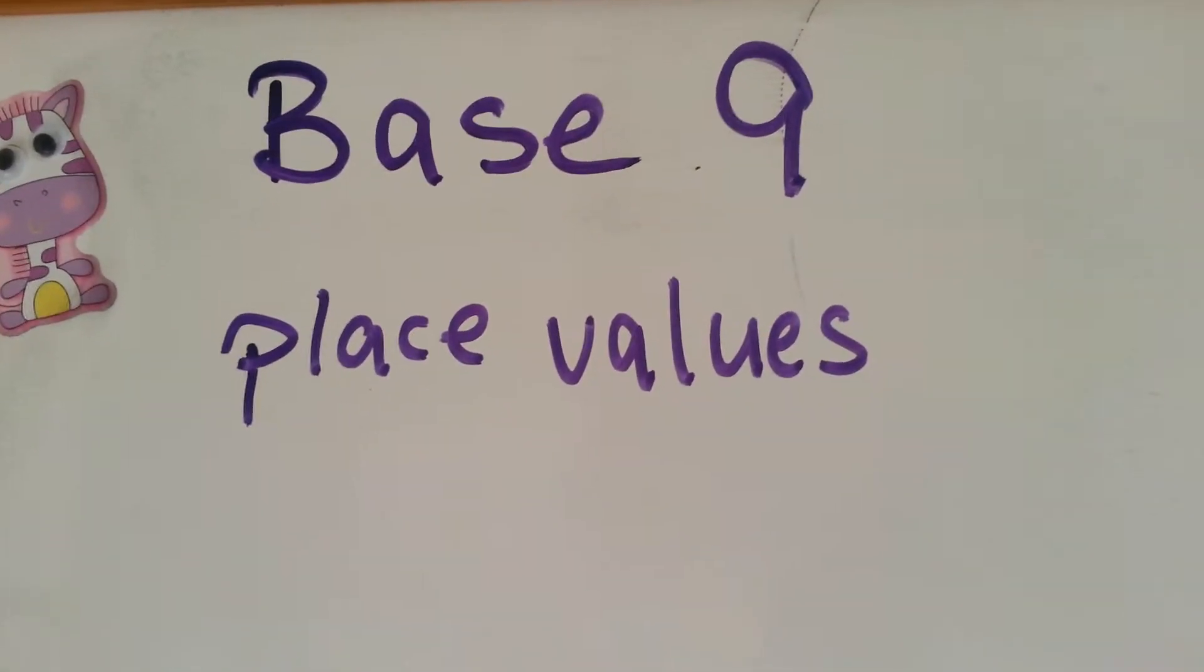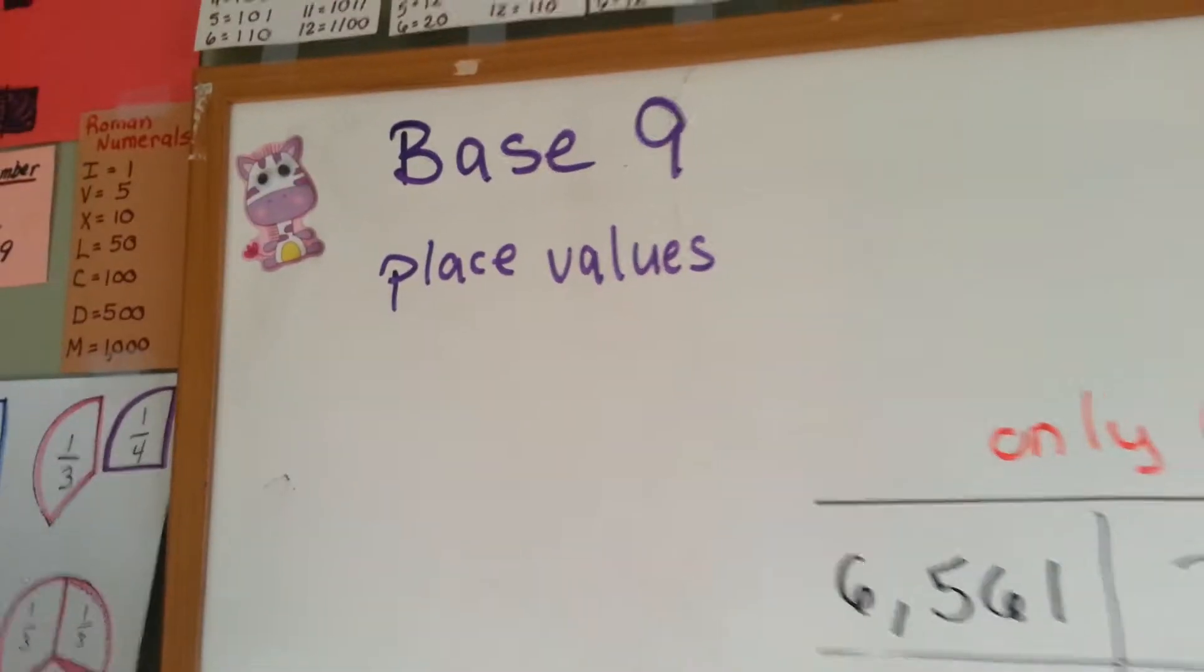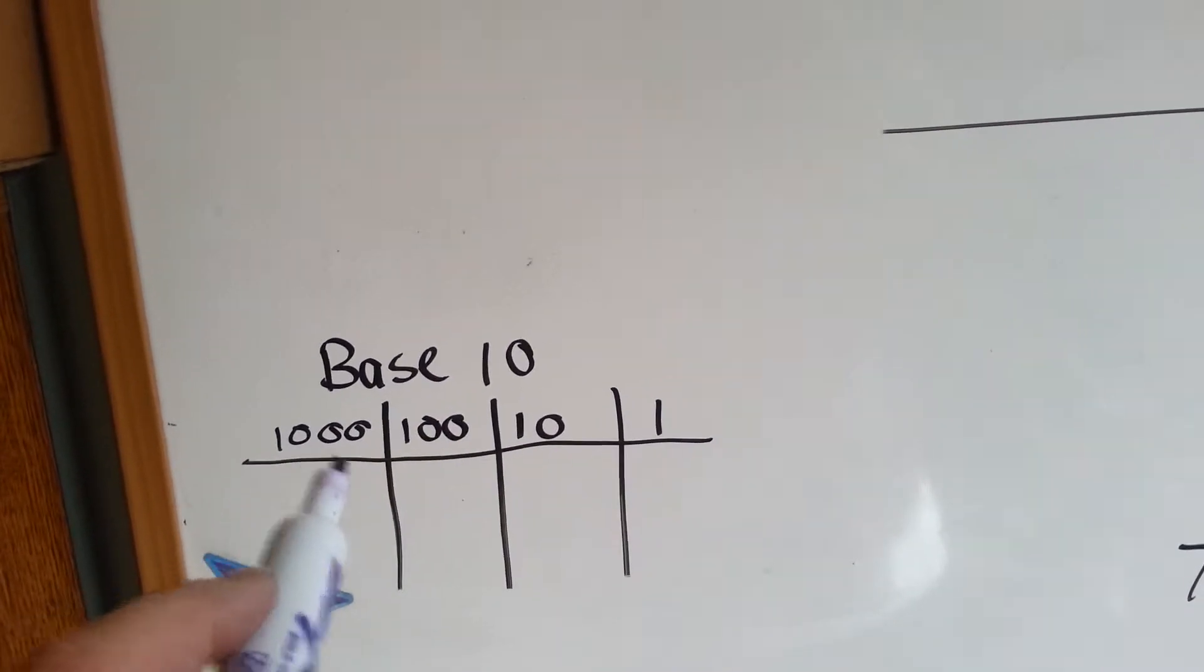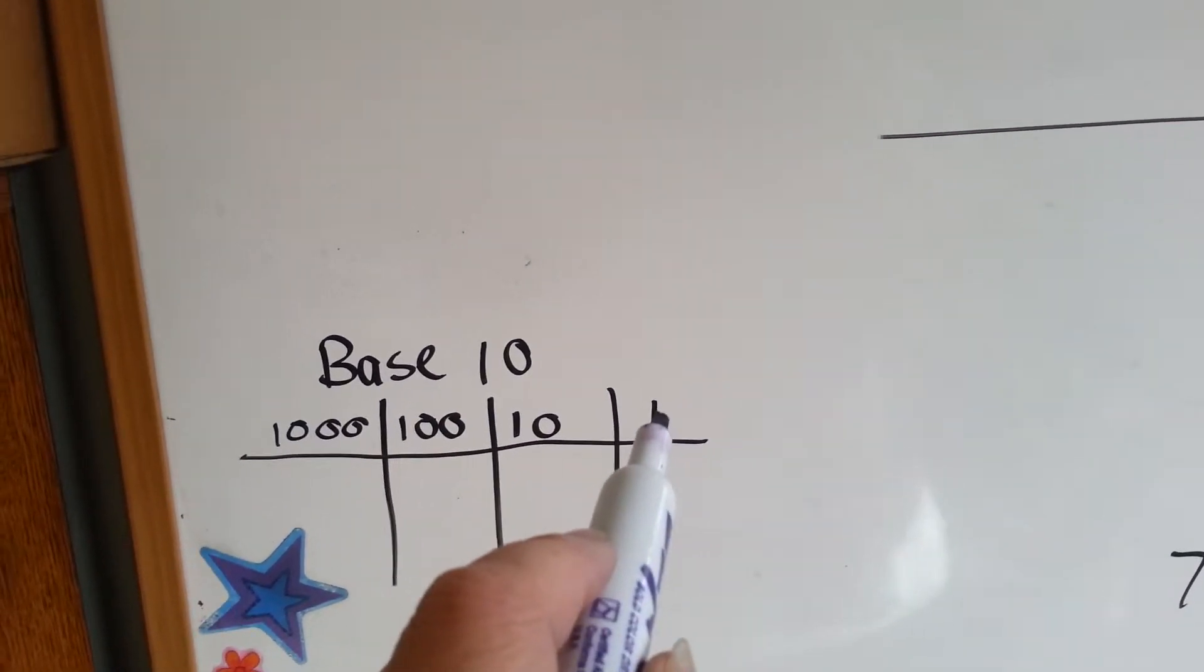Base 9 place values. Our normal place value system is base 10. It's all based on the number 10. You start with the ones column here.